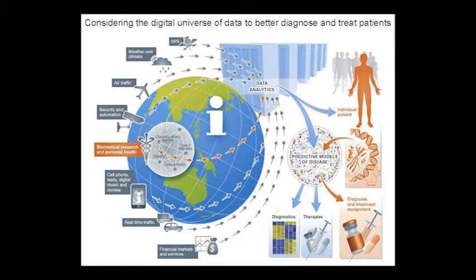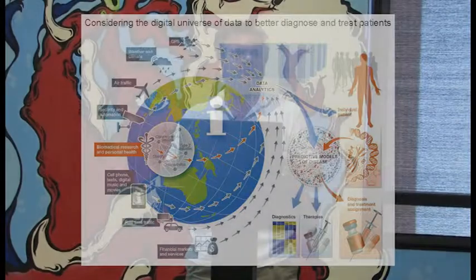When a patient walks through the door at Mount Sinai, the idea is: can we better inform on that patient's condition and how best to treat it, given the digital universe of information? How do we integrate it, build these models, validate them, and then apply them?